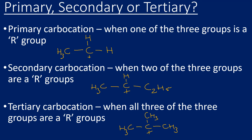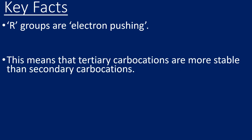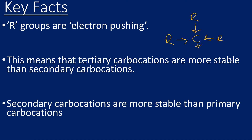A key fact: R groups are known as electron-pushing groups. This means that tertiary carbocations are the most stable, because three electron-pushing R groups stabilize the positive charge. A tertiary carbocation is more stable than a secondary, and a secondary is more stable than a primary, because it has two electron-pushing groups instead of just one.